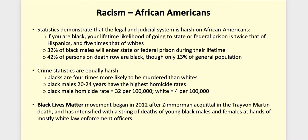Of the persons on death row, 42% are African American, even though in the general population they represent only 13%. The victimization statistics are equally harsh — Black Americans are four times more likely to be murdered than whites. Young Black males aged 20 to 24 have the highest homicide rates. The black male homicide rate is 32 per 100,000, as opposed to four per 100,000 for whites.